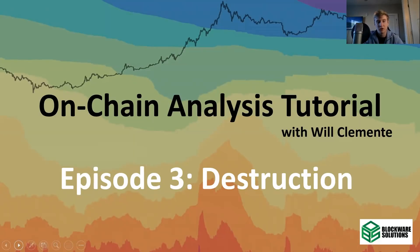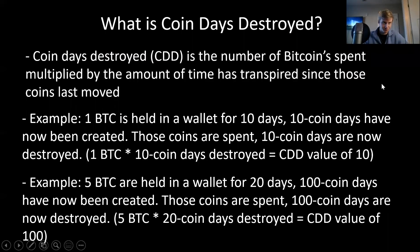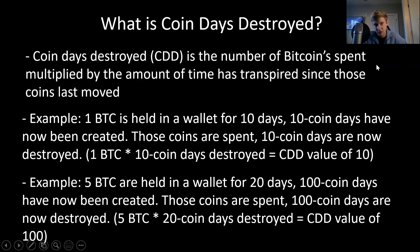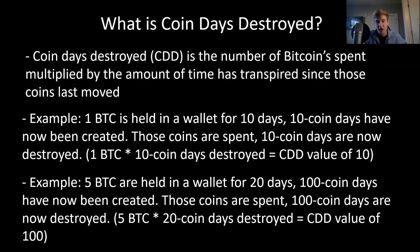Talking about destruction. Destruction and Coin Days Destroyed are both very key, foundational building block concepts to understand in the world of on-chain analysis. There are a lot of macro indicators or oscillators that are built off of these metrics, but to understand those — which we'll dive into in future episodes — we do need to first cover what is destruction, what is Coin Days Destroyed, and what is dormancy. So what is Coin Days Destroyed? Coin Days Destroyed, or CDD, is the number of Bitcoin spent multiplied by the amount of time that has transpired since those coins were last moved. The first example: one Bitcoin is held in a wallet for 10 days. So now 10 Coin Days have been created because you multiply one BTC times the number of days those coins have been in the wallet.